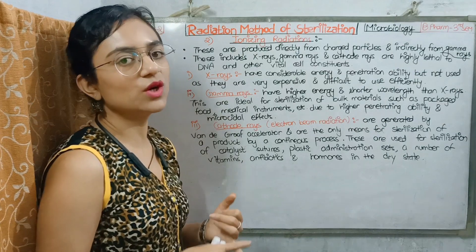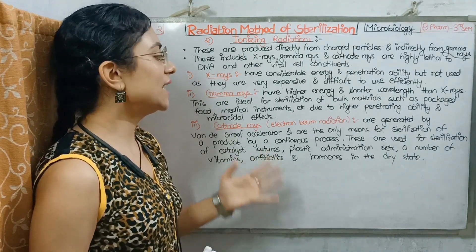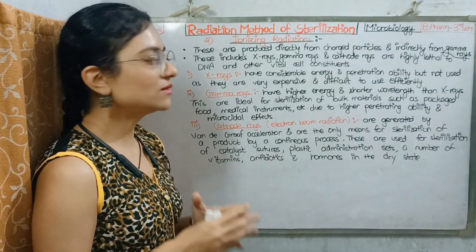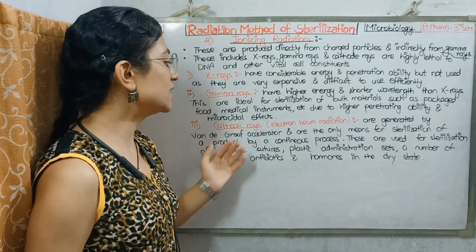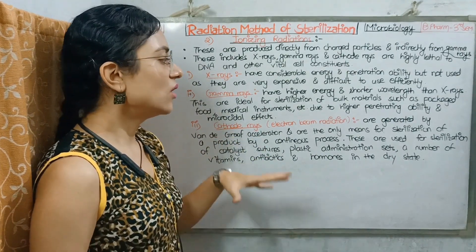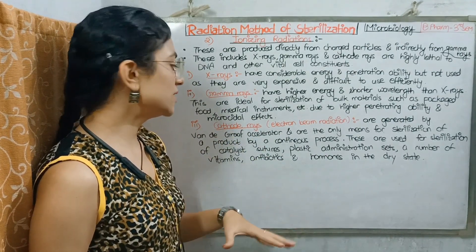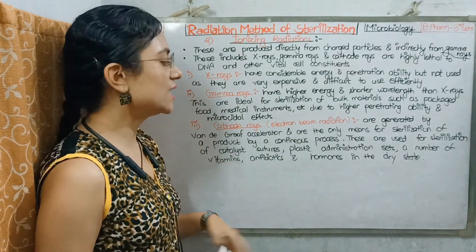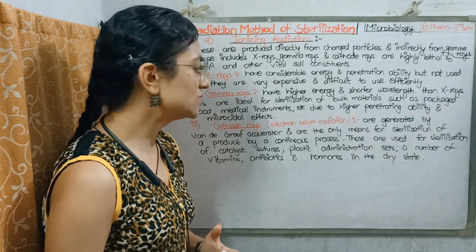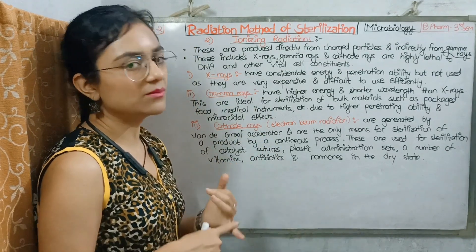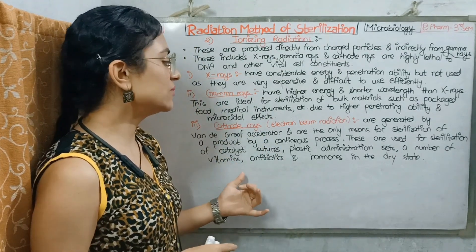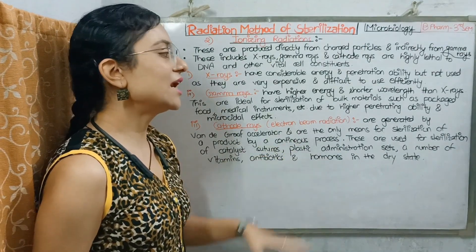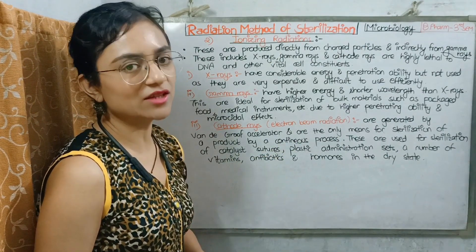The third type is cathode rays, also called electron beam radiation, which can be generated via a Van de Graaff accelerator. Cathode rays are used for sterilizing surgical sutures, plastic administration sets, and a number of vitamins, antibiotics, and hormones which are in a dry state.